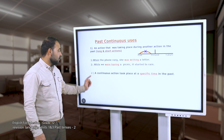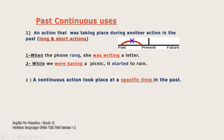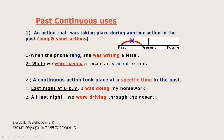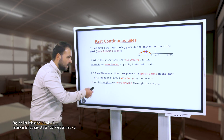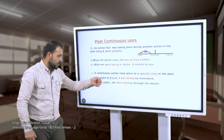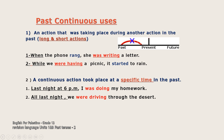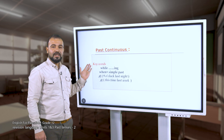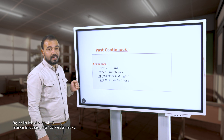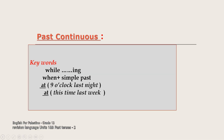The second use: a continuous action took place at a specific time in the past. Example: 'Last night at 6 p.m. I was doing my homework' - at this specific time an action was happening. Another example: 'All last night we were driving through the desert.' Keywords related to the past continuous: 'while' followed with the long action, 'when' usually followed with the short action, 'at' with a specific time in the past, and so on.